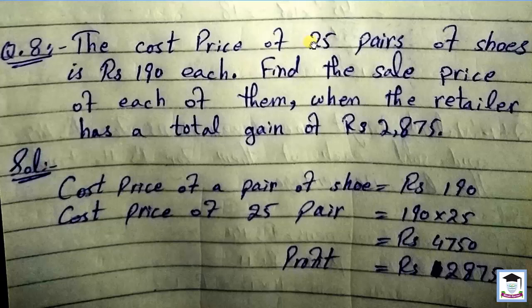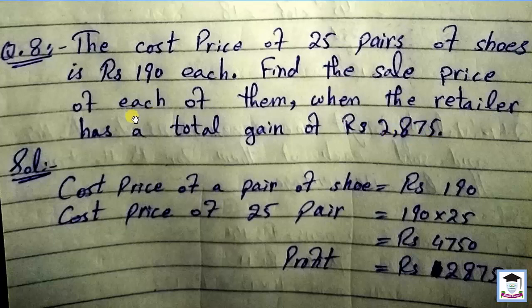Question number 8: The cost price of 25 pairs of shoes is 190 rupees each. Find the sale price of each when the retailer has a total gain of 2875. Cost price of 25 pairs: 190 times 25 equals 4750 rupees. Profit is 2875.